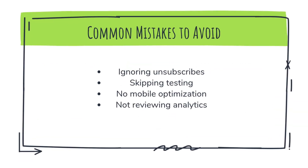Here are some common mistakes to avoid. Ignoring unsubscribes or compliance rules — that can damage your sender reputation. Skipping testing — without data, you're guessing. Not optimizing for mobile — most users open emails on their phones, so make sure they look great. And finally, not reviewing analytics — if you don't measure it, you can't improve it.